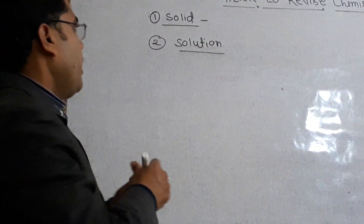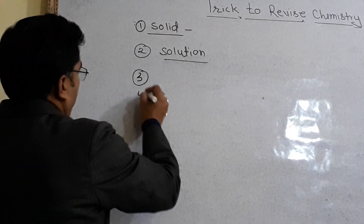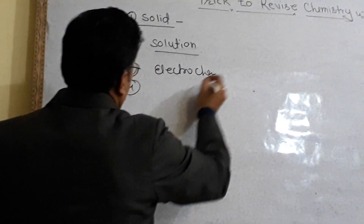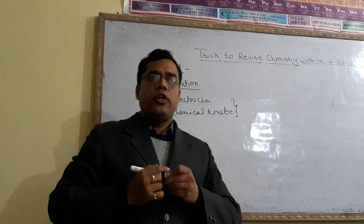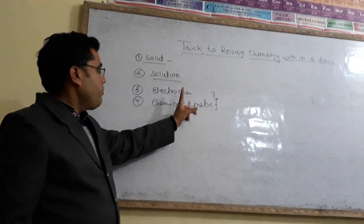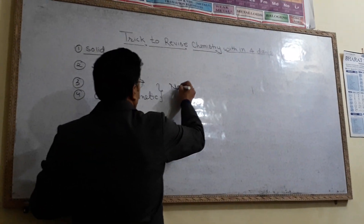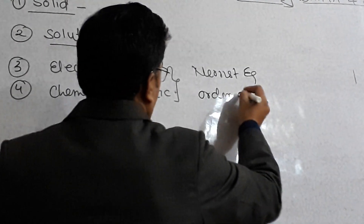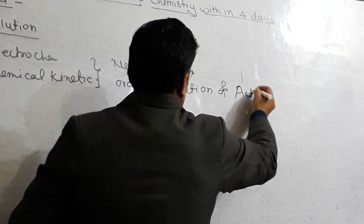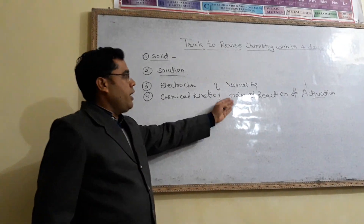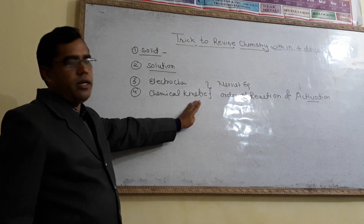After Solutions, two again important topics are Electrochemistry and Chemical Kinetics. In the board examination you will get numericals based on both. From Electrochemistry, one numerical from the Nernst equation. From Chemical Kinetics, you will get numericals on order of reaction as well as activation energy. So revise numericals based on the Nernst equation, and order of reaction as well as activation energy from Chemical Kinetics.